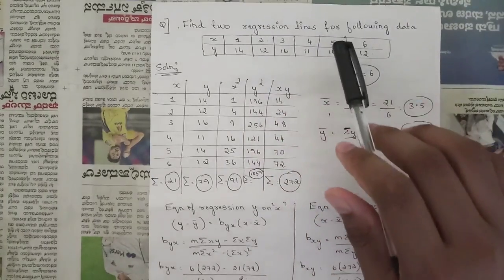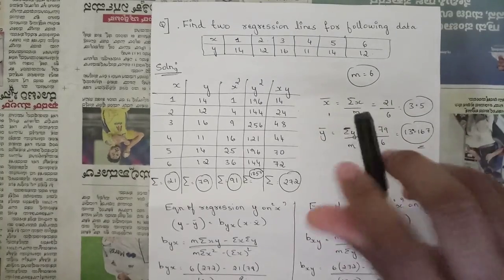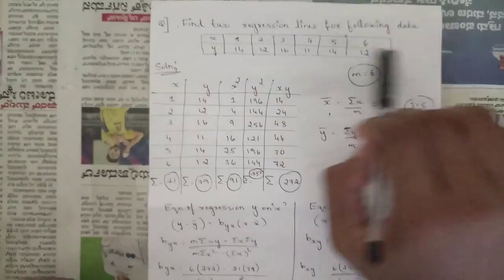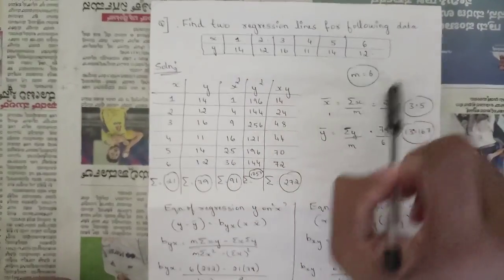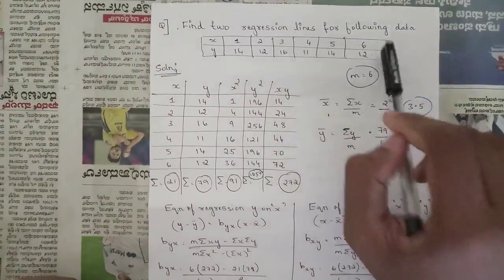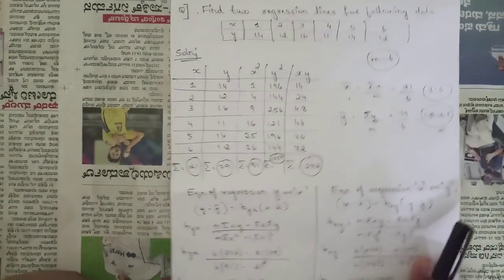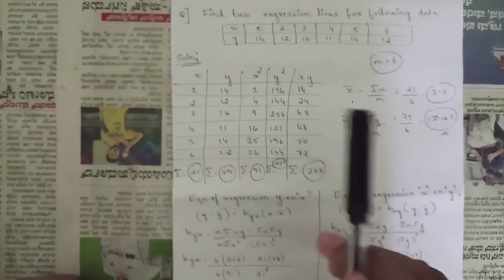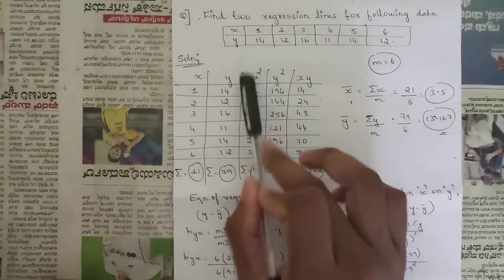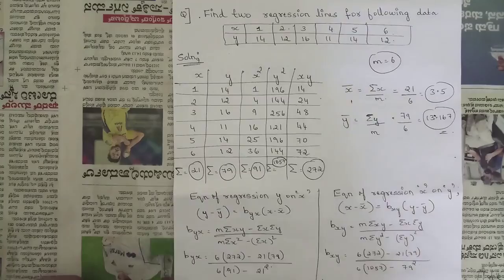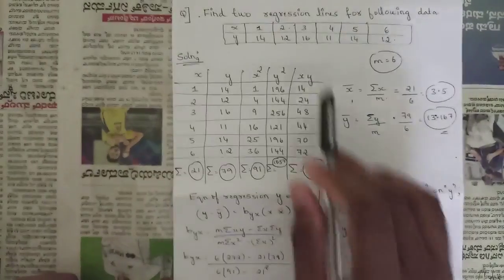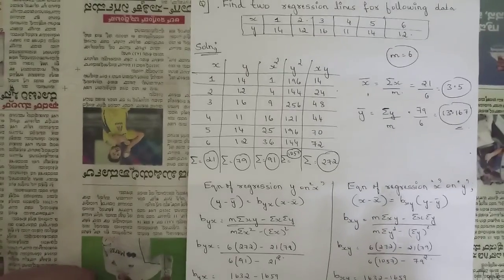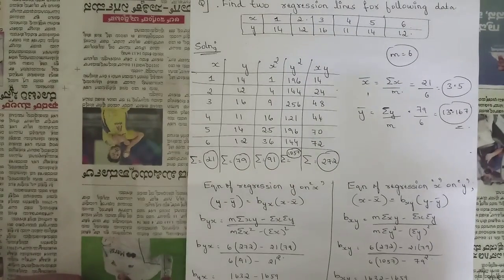The next question asks us to find two regression lines for the following data. The number of observations is 6. To find the regression lines, the parameters we need are: x, y, x², y², and xy — these are the five parameters for the regression line calculations.